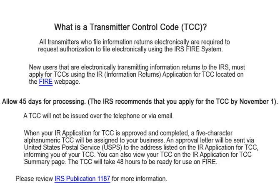When your application is approved and completed, a five-character alphanumeric transmitter control code will be assigned to your business. An approval letter will be sent via United States Postal Service to the address listed on the Information Returns application for the Transmitter Control Code. You can also view your Transmitter Control Code on the Information Returns application Transmitter Control Code summary page. The TCC will take 48 hours to be ready for use on FIRE. Please review Publication 1187 on the IRS website for more information.